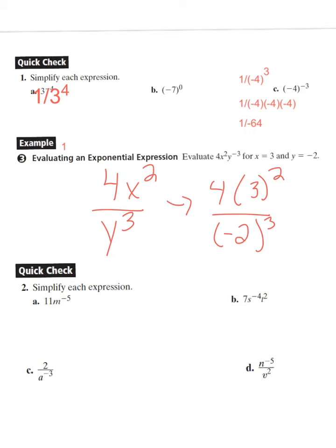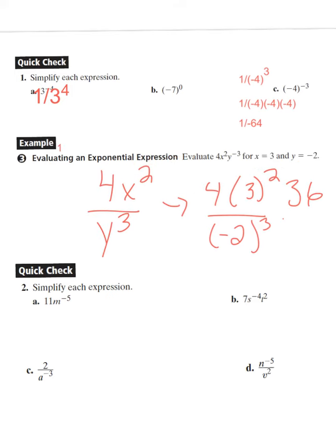As we compute and do the math, we end up getting 36 over negative 8. We can divide both by 4 and we end up getting 9 over negative 2, which would reduce to negative 4.5.